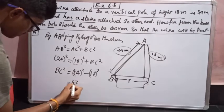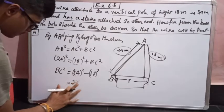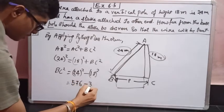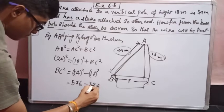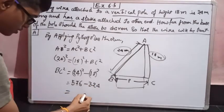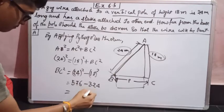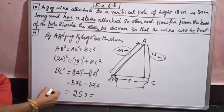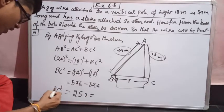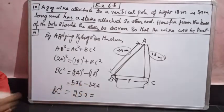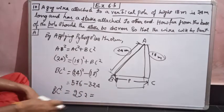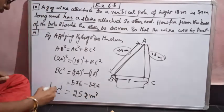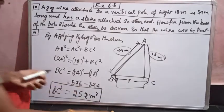24² is 576. 18² is 324. We will be getting 252. BC² = 252. Without calculator, calculation of this root is highly difficult, so let me simplify that first. Now I have got BC² = 252 meter².